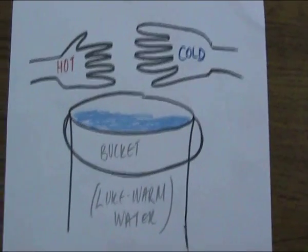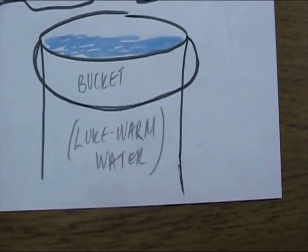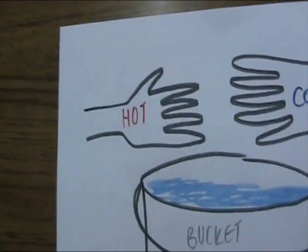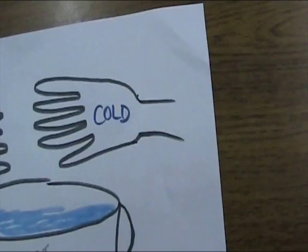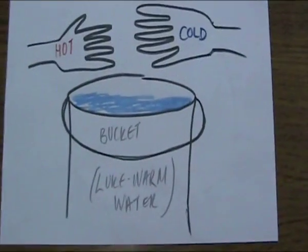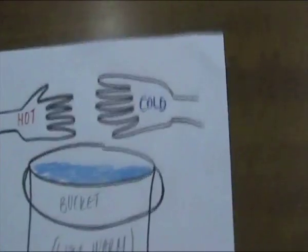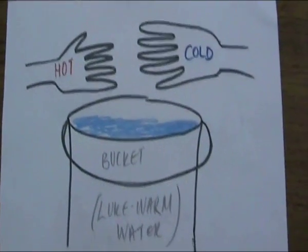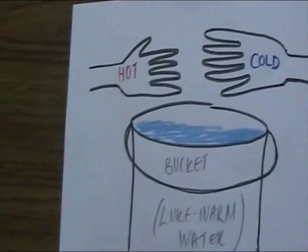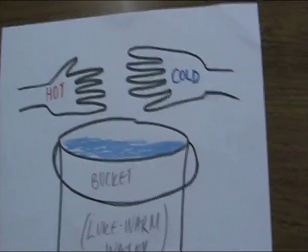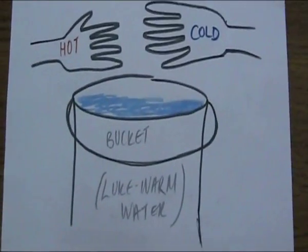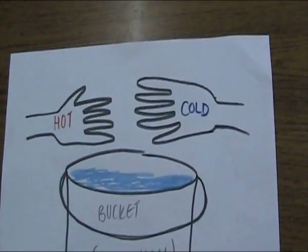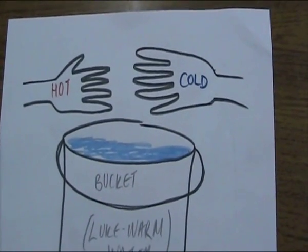Now let's test temperature. If we were to get a bucket of lukewarm water and place within it one hot hand that's been on the radiator for an hour and one cold hand that's been out of the window for an hour, why do they both sense the water differently? The hot hand feels cold water while the cold hand feels warm water. How can one bucket of water be two different temperatures at exactly the same time? This leads us to conclude that hot and cold are not real properties, but are effects that we as observers are subject to.